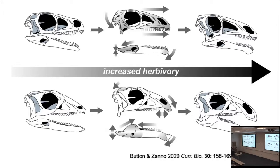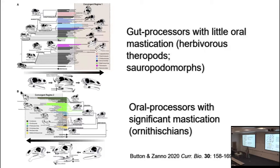A study from last year looked at herbivory in different clades of dinosaurs and found two different pathways. Among saurischians — whether sauropodomorphs or herbivorous theropods — there tends to be very little oral mastication, so very little chewing, with most digestion happening in the gut. In contrast, their models showed that ornithischians had a lot of mastication — that is, chewing. That's not a big surprise, but it's nice to see it confirmed. They can even show the degree to which these processes get enhanced — the lever arms and so forth — over the course of the history of these groups.